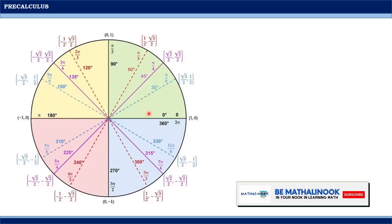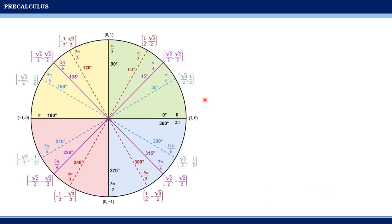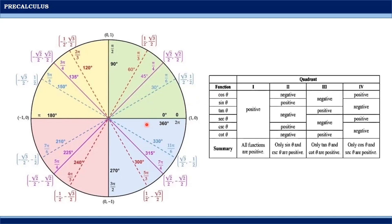Moreover, since each angle may fall in any quadrant aside from the quadrantal angles, as its coordinates change in signs, it also affects the signs of the circular functions. For example, if the angle is in the first quadrant where both x and y are positive, it follows that all the functions — cosine, sine, tangent, secant, cosecant, and cotangent — will also be positive.